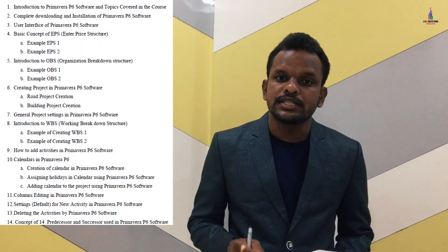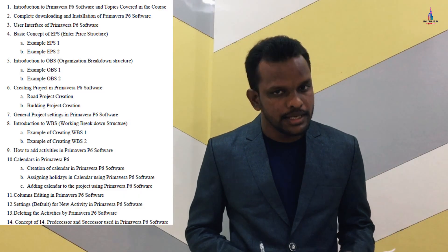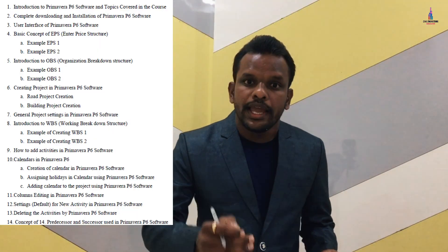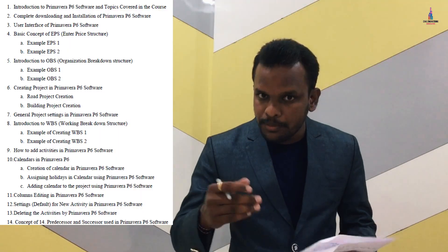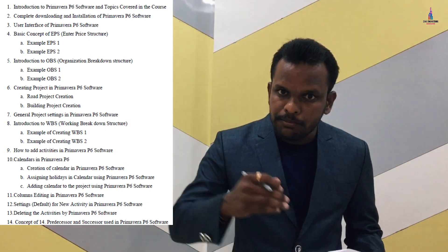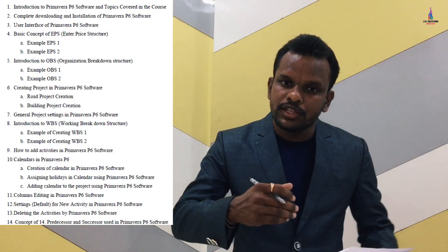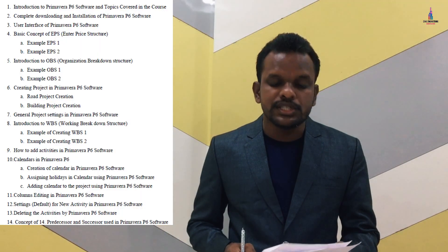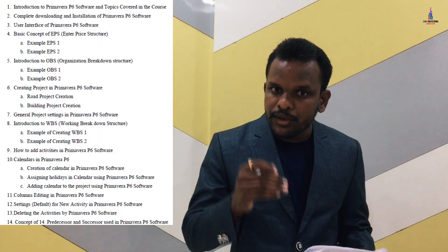After EPS, examples EPS1 and EPS2 are covered. Next is OBS creation — Organizational Breakdown Structure — with at least two examples showing how to create OBS for different projects. Then comes project creation and scheduling, followed by WBS — Work Breakdown Structure — which is very important. The complete introduction to WBS is explained, then WBS example one and example two are created using Primavera P6.